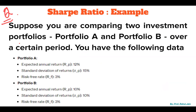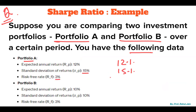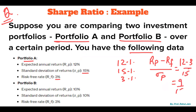Let's take an example. Suppose you are comparing two investment portfolios, Portfolio A and Portfolio B, over a certain period. Portfolio A has an expected annual return of 12%, standard deviation of 15%, and risk-free return of 3%. The Sharpe Ratio is (12 - 3) / 15 = 9/15 = 0.6. So the Sharpe Ratio for Portfolio A is 0.6.